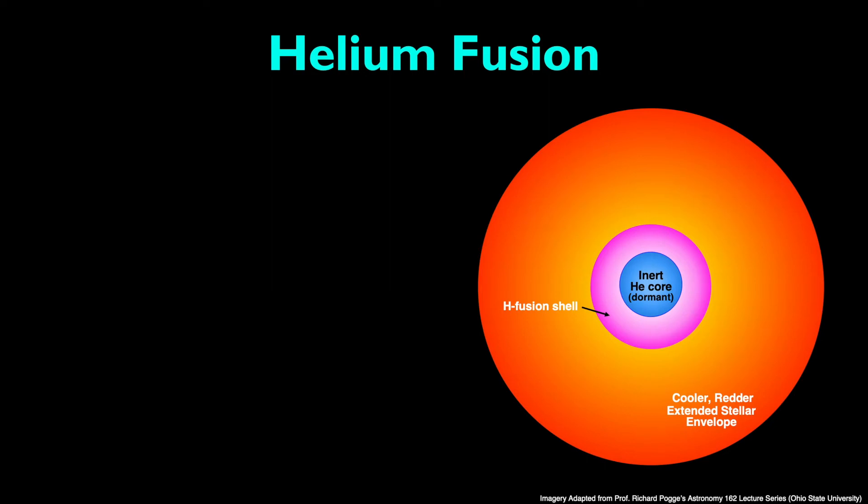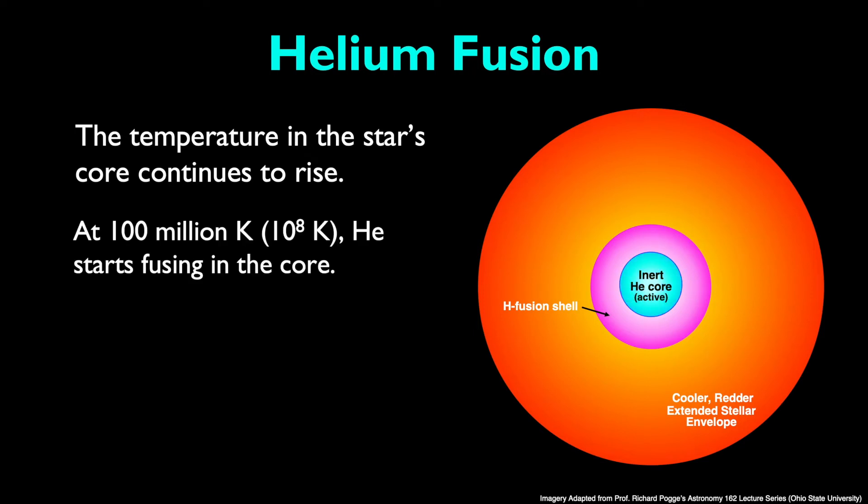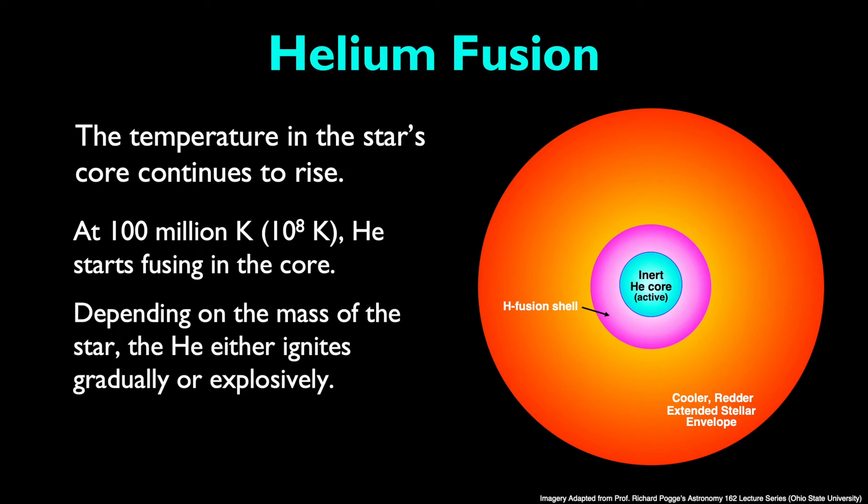Now, as fusion in the hydrogen shell continues, the temperature in the star's core continues to rise too. Eventually, it reaches the perfect temperature necessary, 100 million Kelvin, for helium to begin fusing in the core as well. However, depending on the mass of the star, the helium either ignites gradually or explosively. But how exactly does helium fuse into heavier elements?